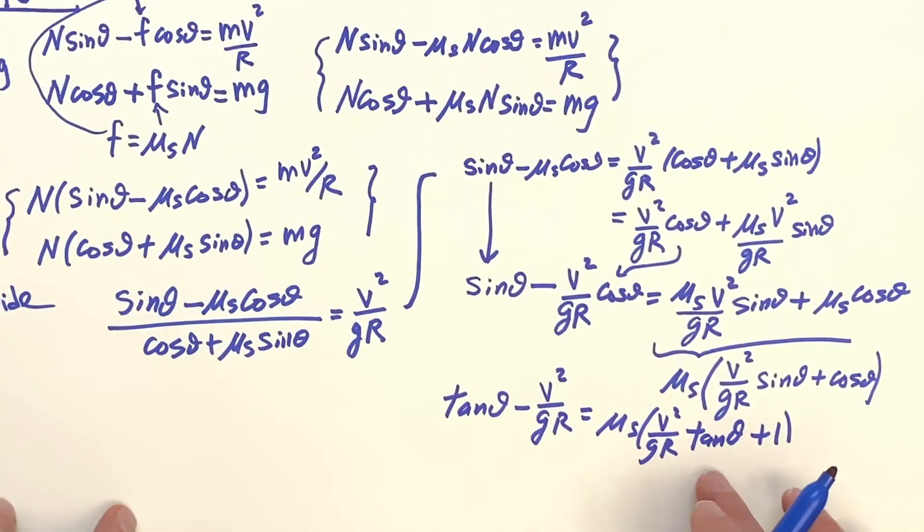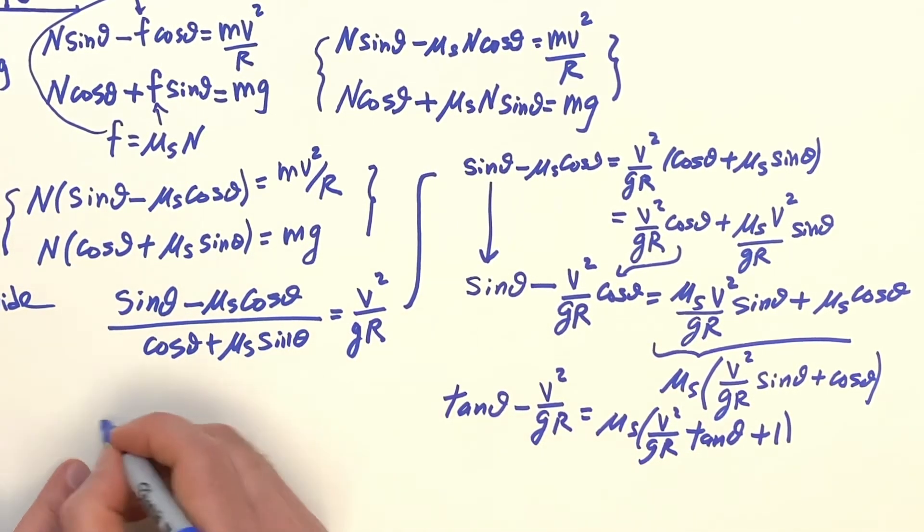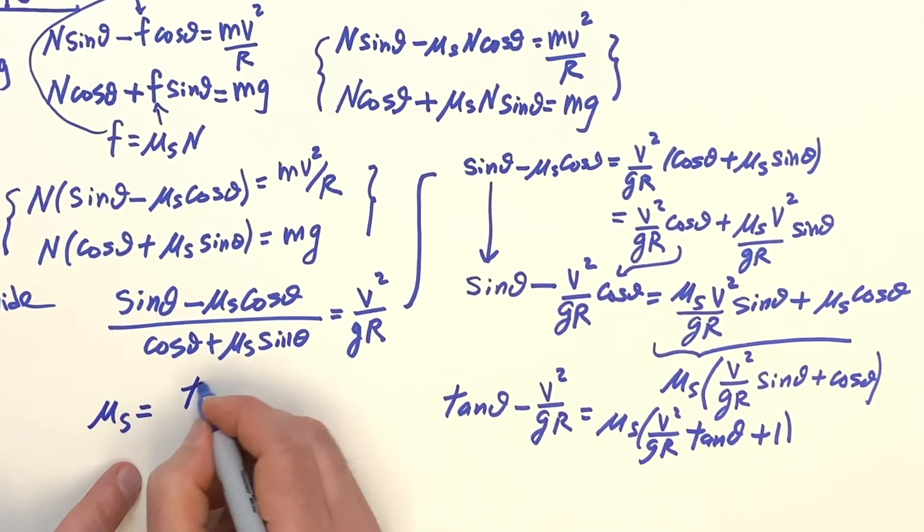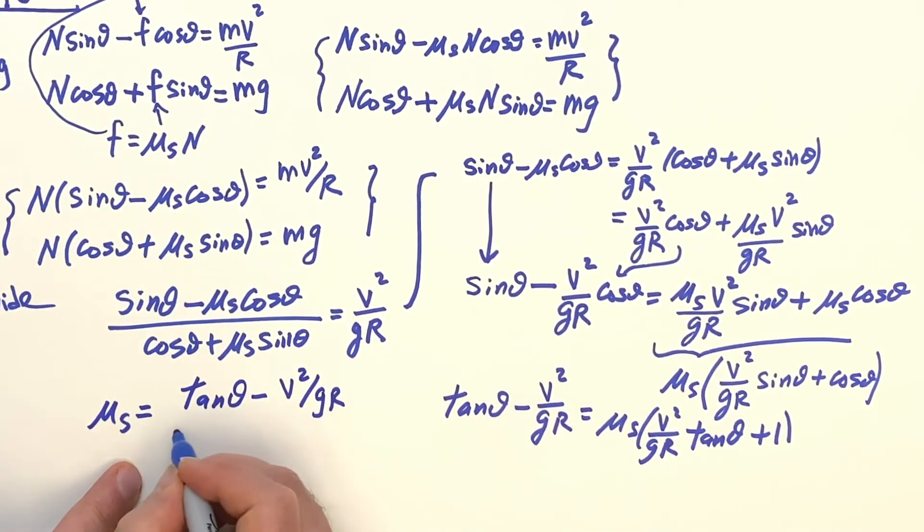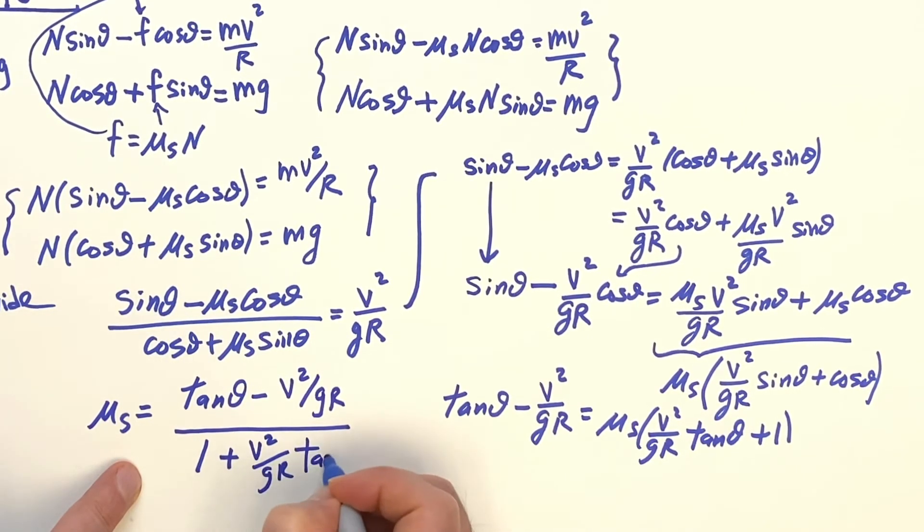So now I divide by this, and I got it. So let's do that. In other words, Mu, S is going to be the tangent of theta minus V squared over G, R. That's this part, and then I'm dividing by all this. I'll put the one first. V squared over G, R, tangent of theta. So this is the equation.